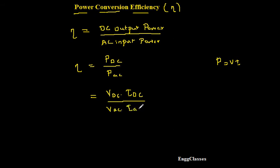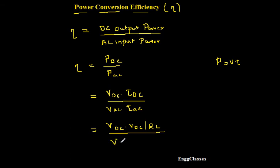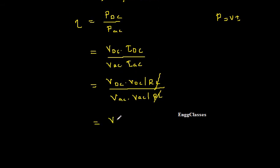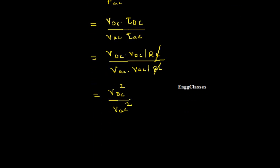Moving further, current can also be expressed in terms of voltage: I = V/R. So IDC = VDC divided by RL, and IAC = VAC divided by R. Since R and R cancel, we ultimately get VDC squared divided by VAC squared.